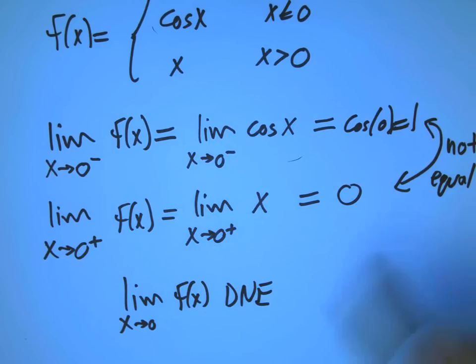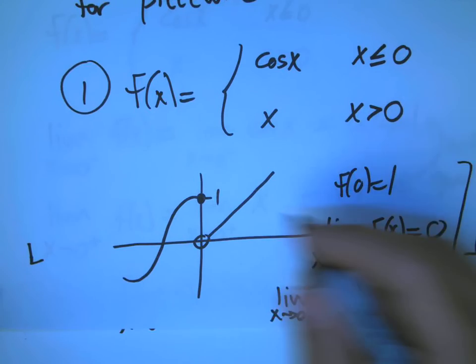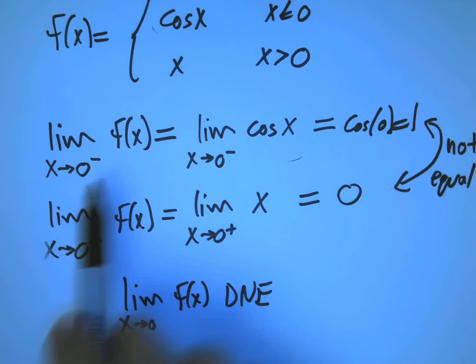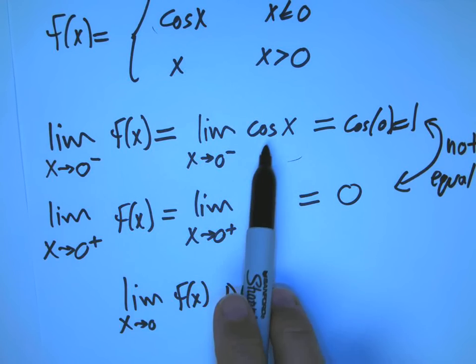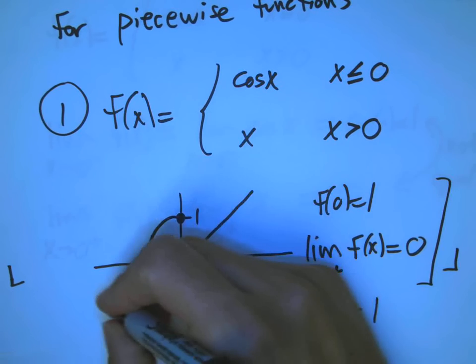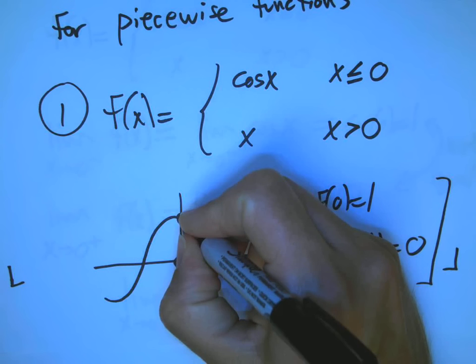And so certainly the limit doesn't exist, the full two-sided limit does not exist because we've got a jump discontinuity. Not only have we figured out that this is DNE, because of the way we calculated it, we can explain exactly what's going on here. From the left it's approaching 1, from the right it's approaching 0. And that's not a good situation. So I'm going to stop in just a second, but let me point out one other way to visualize what we just did here.